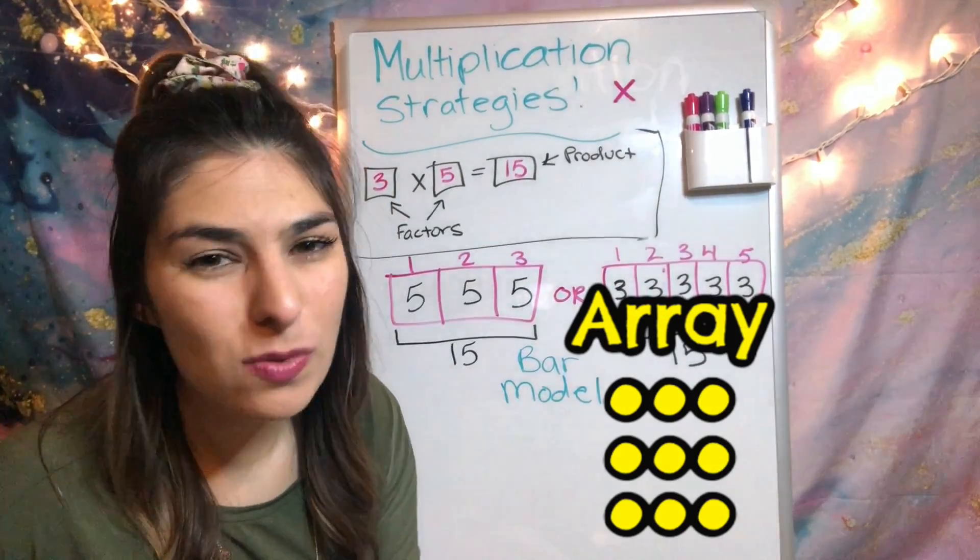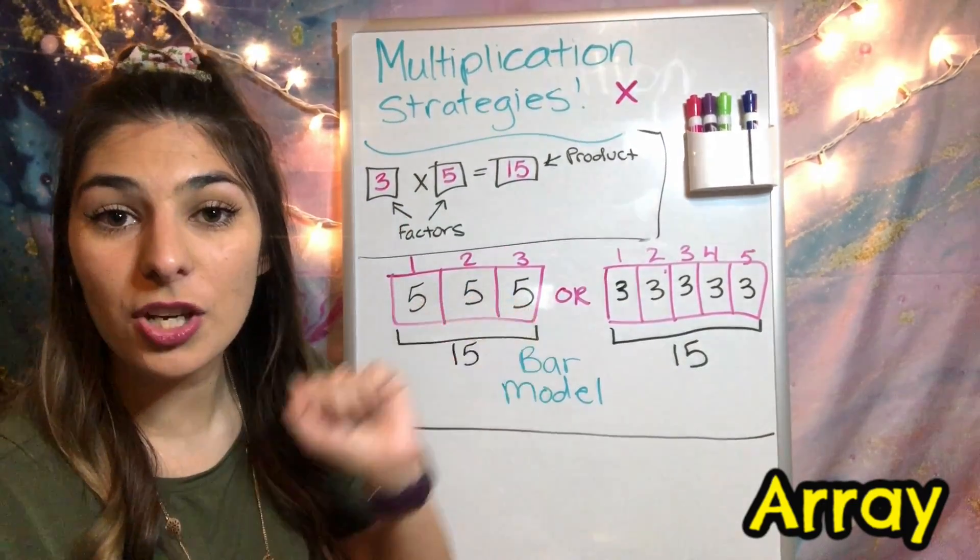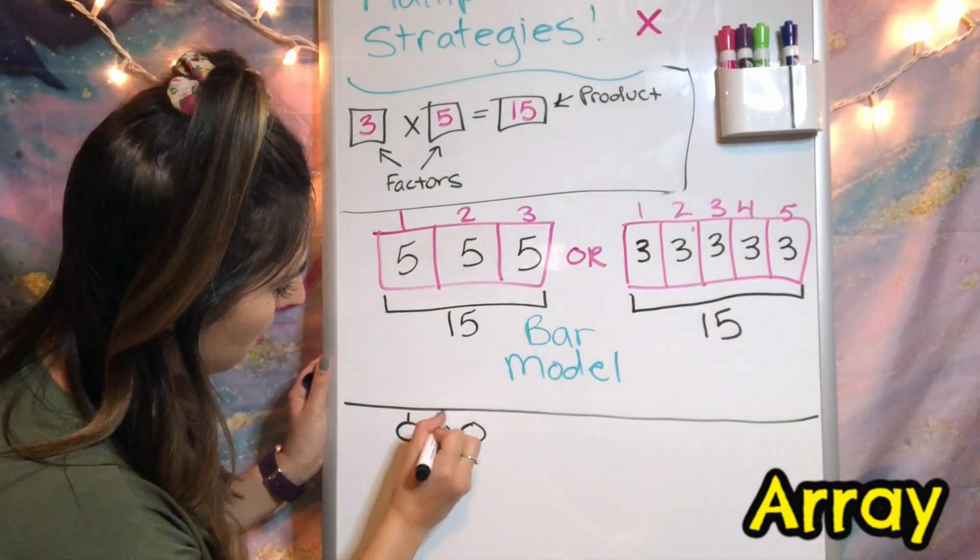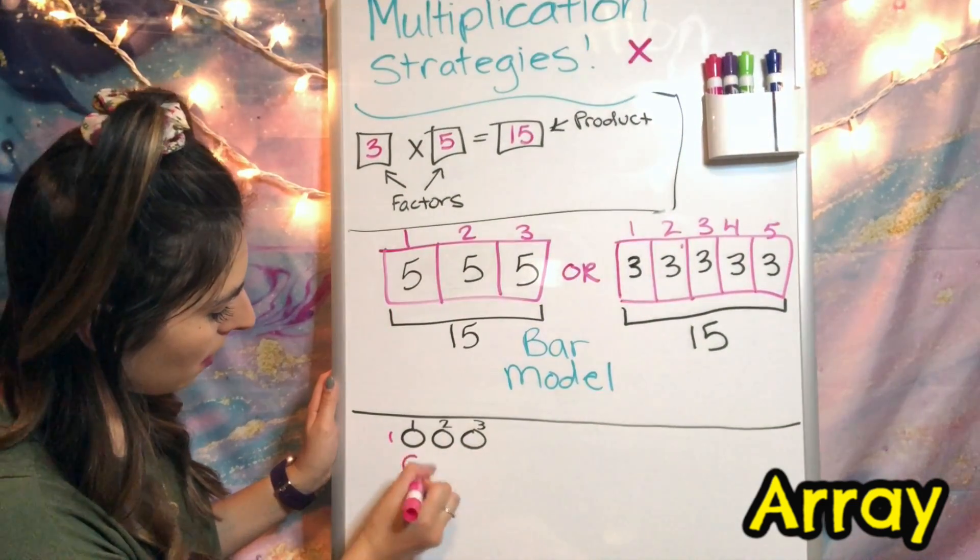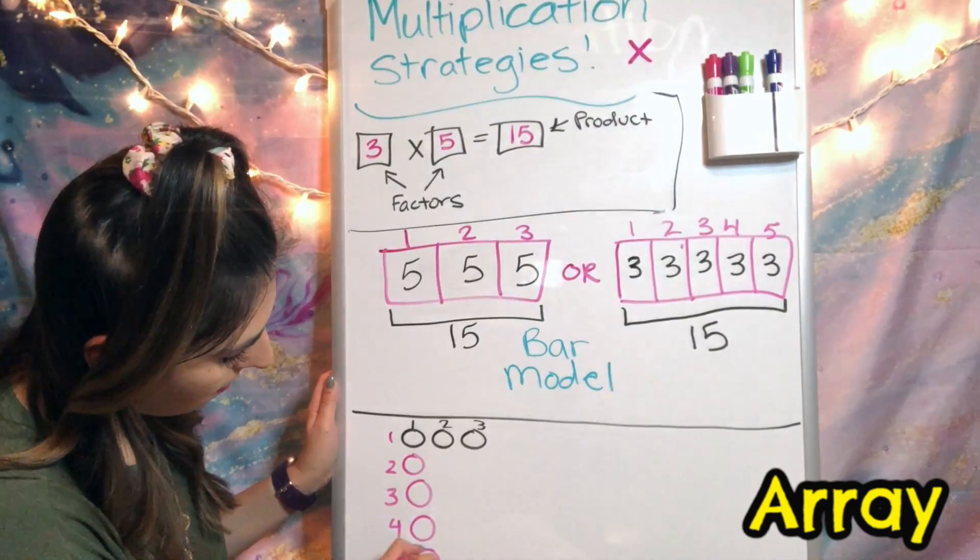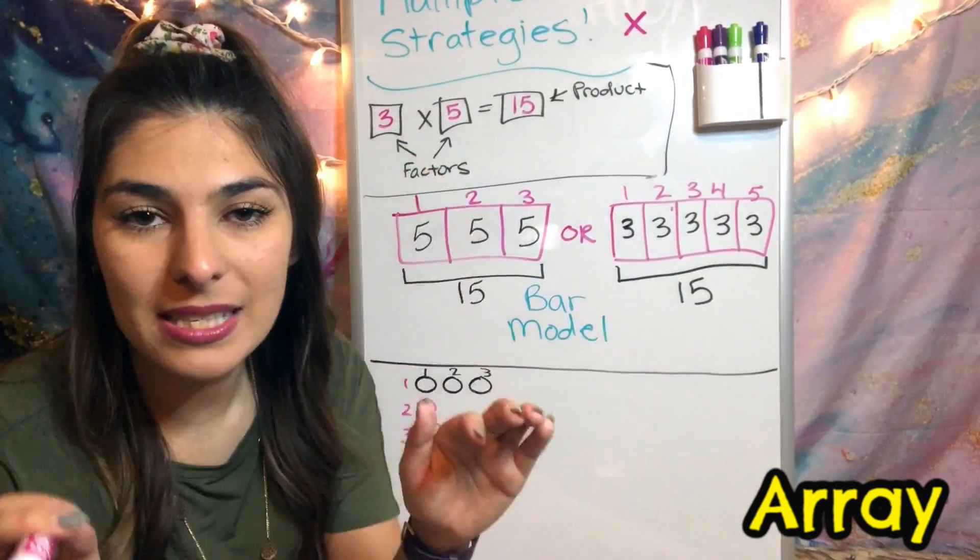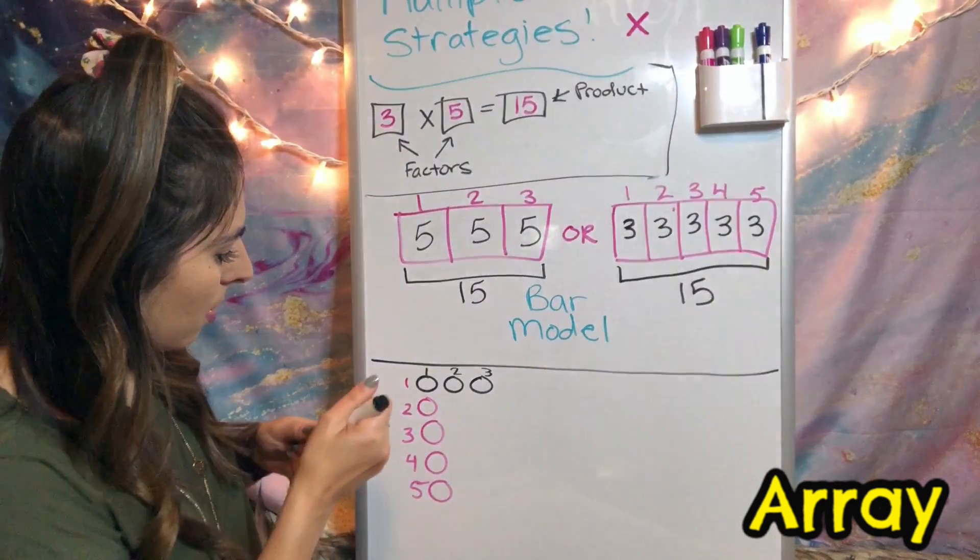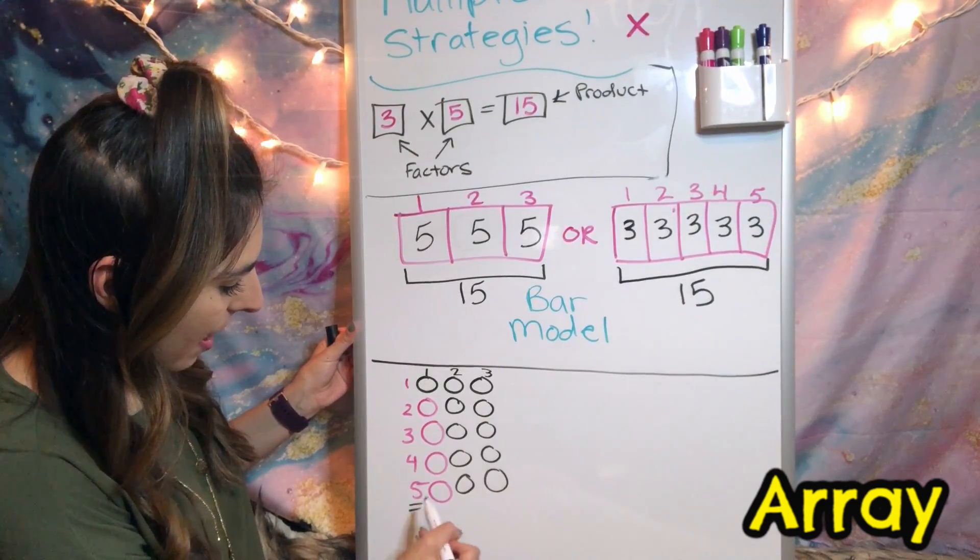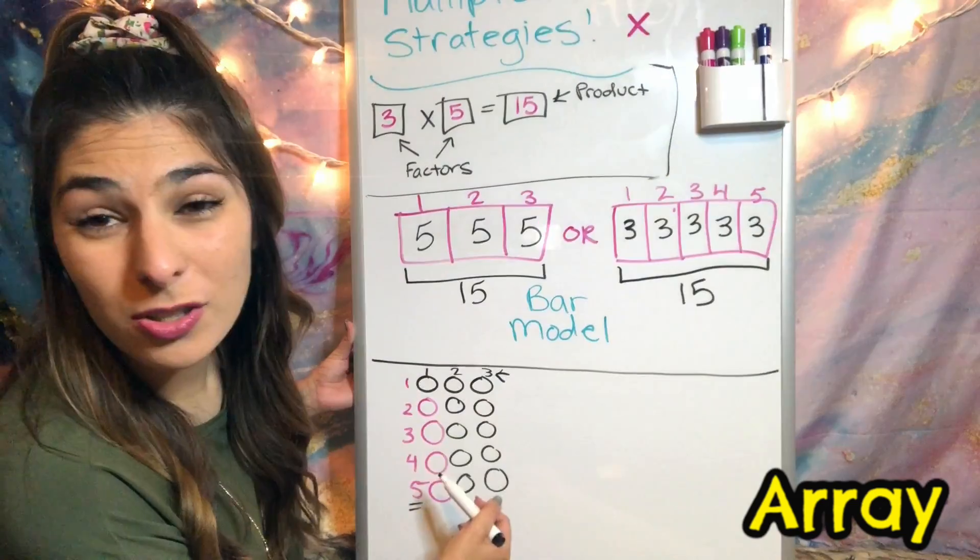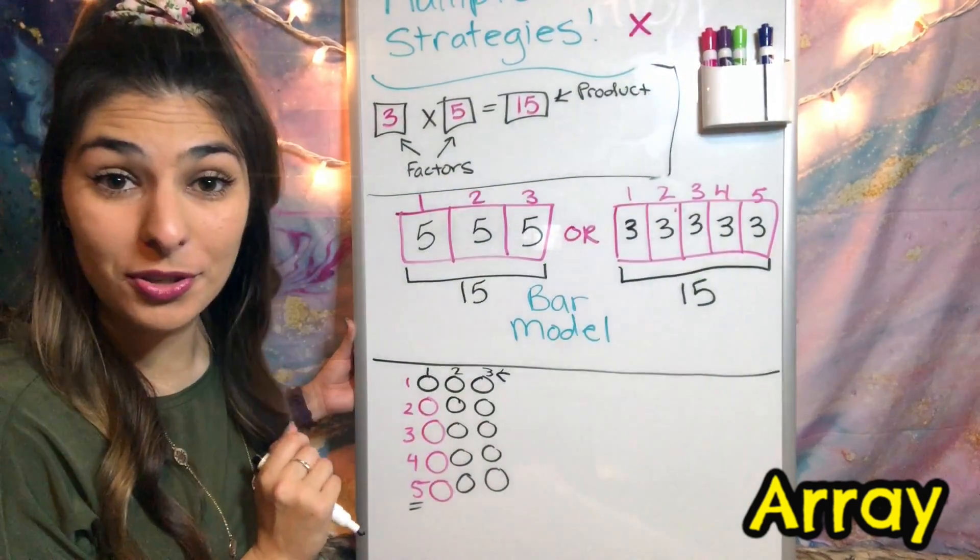The next strategy that we have is an array. This one takes a little bit more time, but it's a little more fun. Again, we're starting with our factor. I'm going to start with three. I'm going to draw three little dots across the top: one, two, three. Then for my other factor, five is the amount that I'm going to go down. So now I need to fill this all up so it makes a square or rectangle. So I'm going to take my black marker and fill them in.